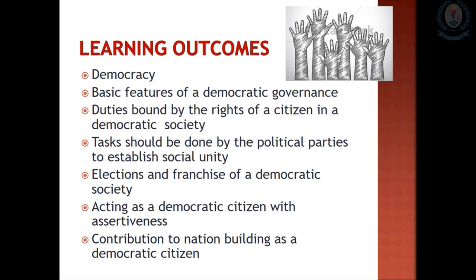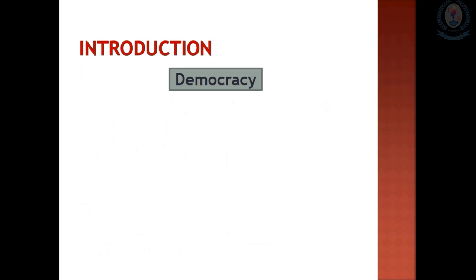Learning outcomes: By studying this chapter you can have a good understanding about democracy, basic features of democratic governance, duties bound by the rights of a citizen in a democratic society, tasks to be done by political parties to establish social unity, elections and franchise, acting as a democratic citizen with assertiveness, and contribution to nation building as a democratic citizen. Democracy is a governing system as well as a lifestyle.